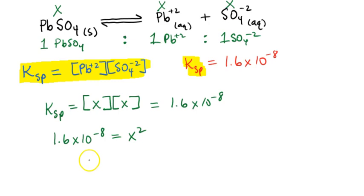X equals 1.3 times 10 to the -4. Remember, square brackets mean concentration in molarity, so this is going to be the concentration of both the lead ions and the sulfate ions.